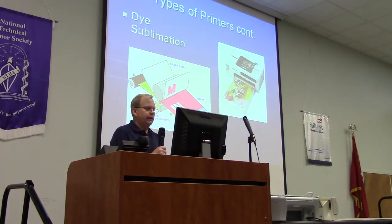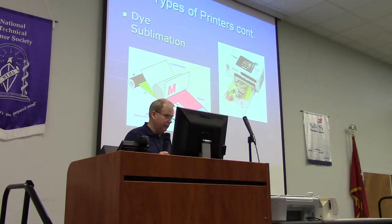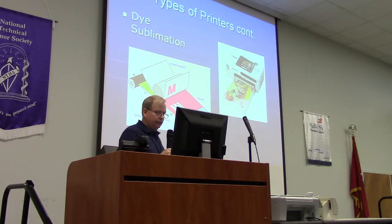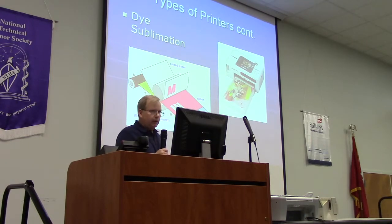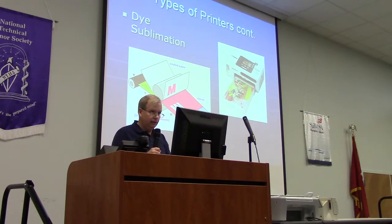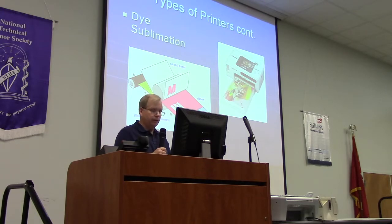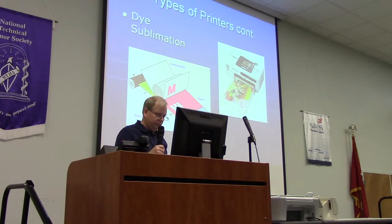Quickly, dye sublimation. It uses a multicolored sheet of plastic so you can get very high color images. These are typically used for photocopiers and also in large format for doing pictures — like the sign at the back of our auditorium. Those are usually done on large plotter-type dye sublimation printers.